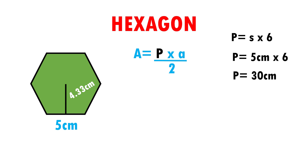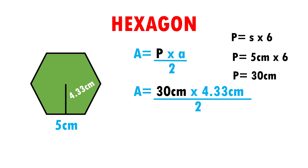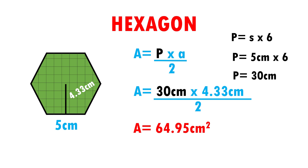Now we are going to replace data. Area is equal to 30 cm of the perimeter times 4.33 cm of the apothem over 2. Multiplying 30 times 4.33 gives 129.9, and when dividing by 2 it gives 64.95 cm squared as a result. This means that our hexagon can fit 64.95 squares of 1 cm per side. Very easy, right?